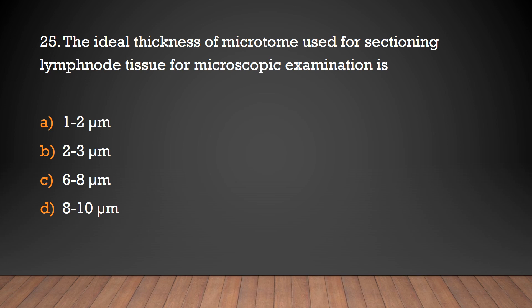The ideal thickness of microtome sections used for sectioning lymphoid tissue for microscopic examination is: 1–2 microns, 2–3 microns, 6–8 microns, or 8–10 microns?